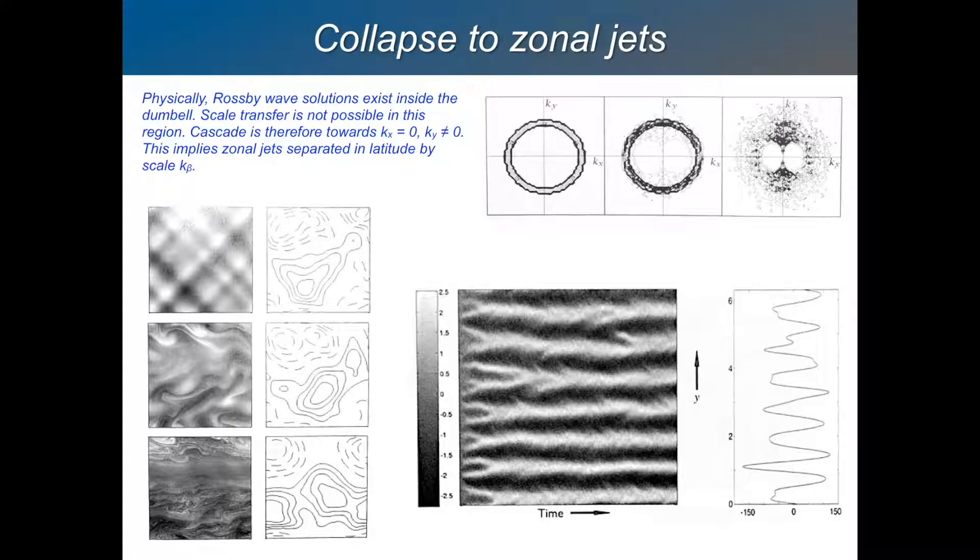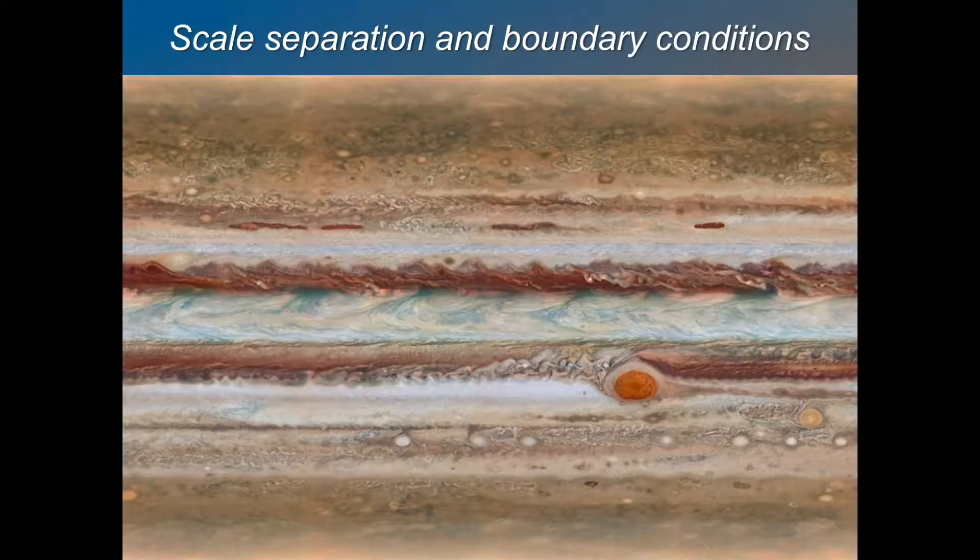What we can do is leave this planet. Here is a picture of a planet where you have beautiful scale separation, and the fluid goes all the way around unimpeded. We have these zonal jets. This is Jupiter, obviously.